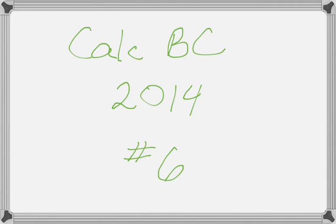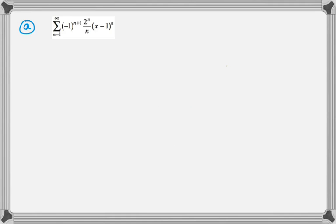This is question number 6 from the 2014 Calc BC exam, and it is a series question. We're given a summation and asked to do some things with it. The first thing we need to do is find the value of r, where r is the radius of convergence.